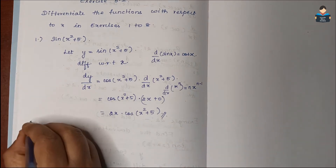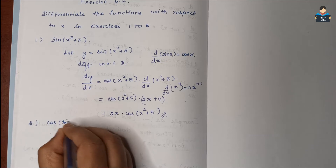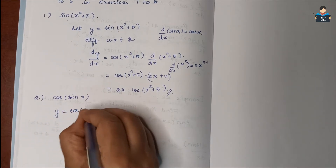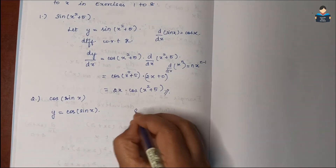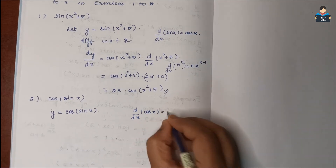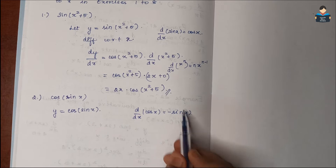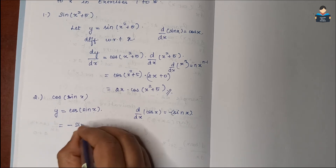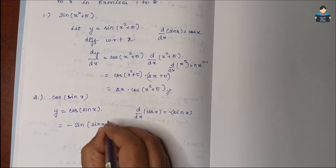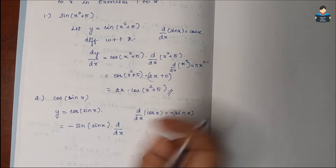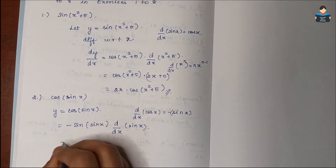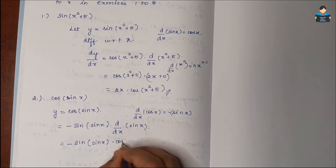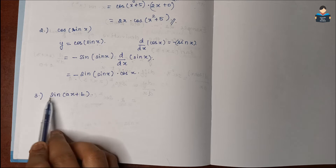For the second question, let y = cos(sin x). The differentiation of cos x is minus sin x. Applying the chain rule, we differentiate the outer function: minus sin(sin x), and then multiply by the derivative of the inner function sin x, which is cos x. So dy/dx = minus sin(sin x) · cos x.